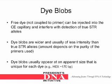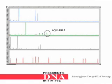Dye blobs: free dyes not coupled to a primer can be injected into the capillary electrophoresis capillary and interfere with the detection of true STR alleles. Dye blobs are wider and usually of less intensity than true STR alleles. The amount depends on the purity of the primers used. Dye blobs usually appear at an apparent size that is unique for each dye. This electropherogram shows an example of a dye blob, which is shorter than the main peaks and also wider.